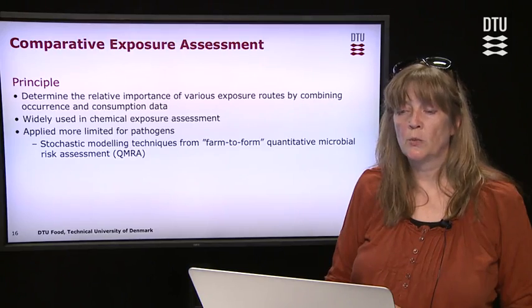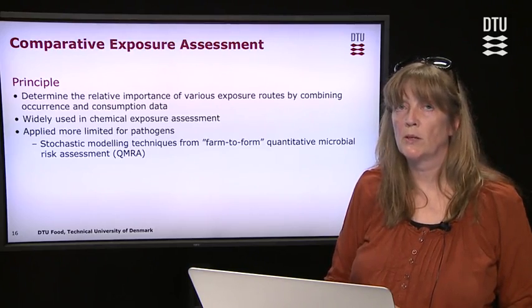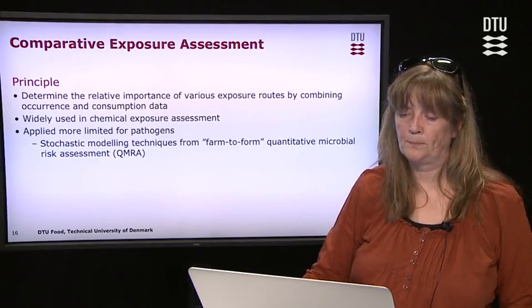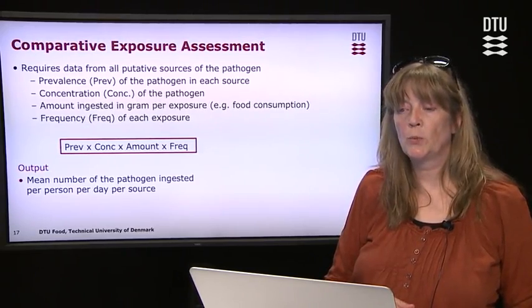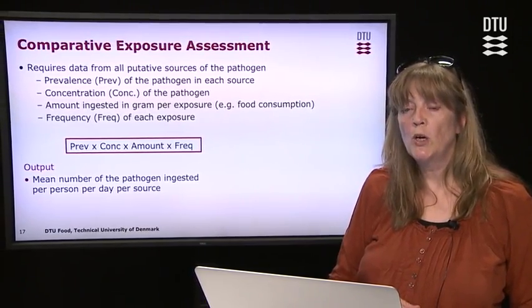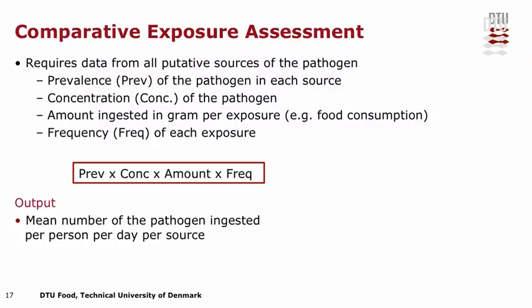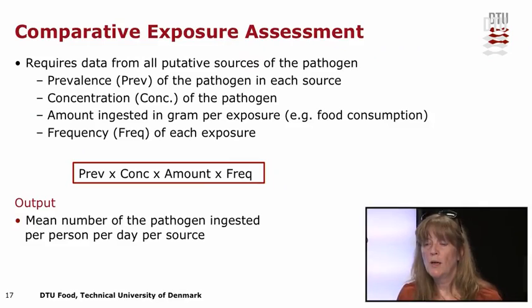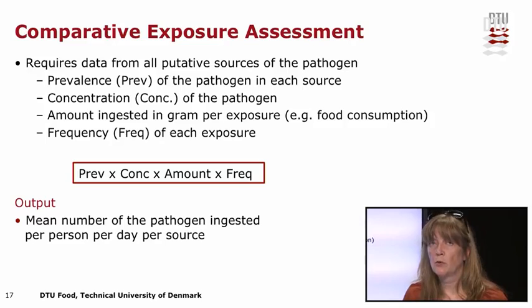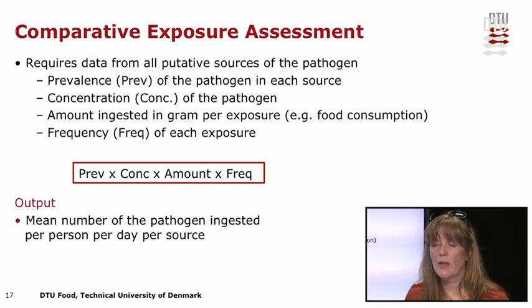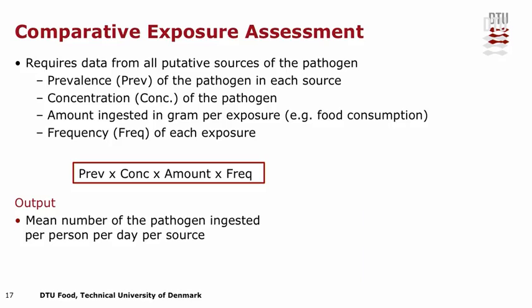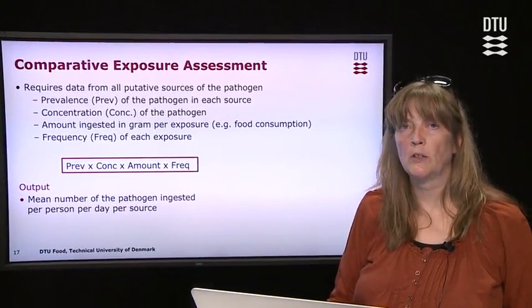The methods used are very similar to those used in farm-to-fork quantitative microbial risk assessment, which will be addressed more in module four. The data required from all putative sources include: the prevalence of the pathogen in each source, the concentration of the pathogen (e.g., CFU per gram), the amount ingested in grams per exposure (e.g., grams of chicken per serving), and the frequency of exposure (e.g., how many times per week). You multiply all of these for all exposure routes to calculate the mean number of pathogens ingested per person per day per source.